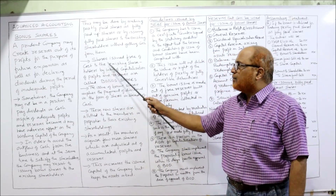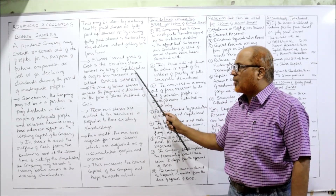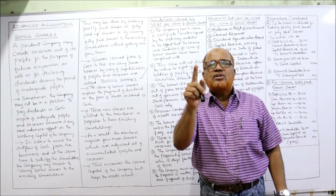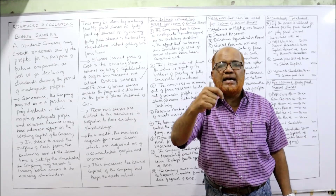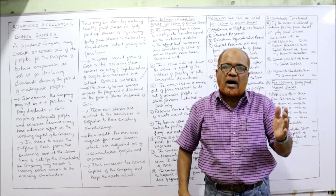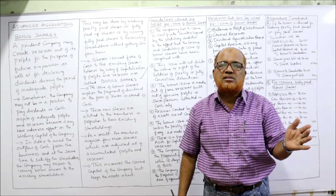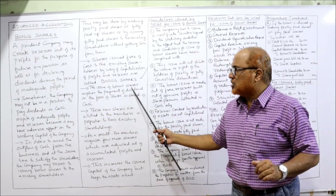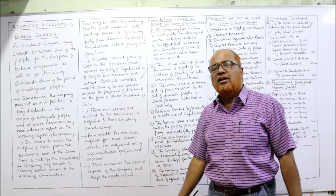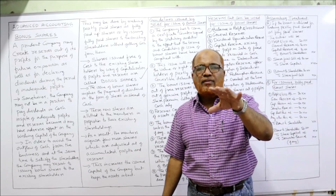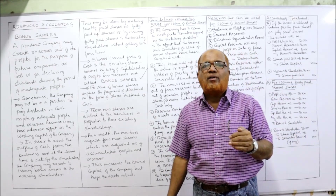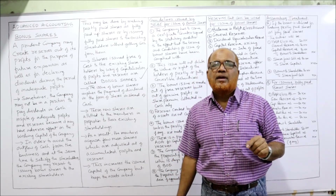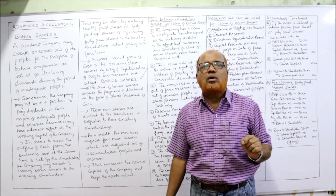Shares issued free of cost to the existing shareholders by way of capitalization of profit and reserves are called bonus shares. Shares which are issued free of cost to the existing shareholders by utilizing past reserves and accumulated profits — capitalization of accumulated profits into capital — that is called bonus shares. The issue of bonus shares implies payment of dividend in terms of shares instead of cash. If dividend is received in terms of shares, it is called bonus shares.